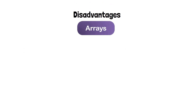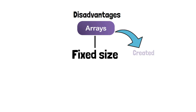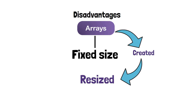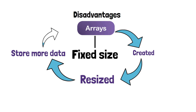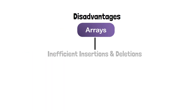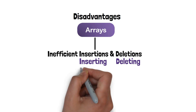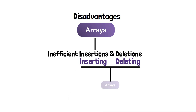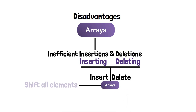Disadvantages of arrays: 1. Fixed size. One of the main disadvantages of arrays is that they have a fixed size. Once an array is created, it cannot be resized, which can be a problem if you need to store more data than the array can hold. 2. Inefficient insertions and deletions. Arrays are inefficient when it comes to inserting or deleting elements, especially in the middle of the array. When you insert or delete an element, you need to shift all of the other elements to make room for the new element or fill the gap left by the deleted element.